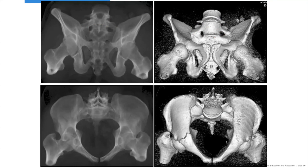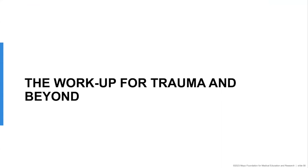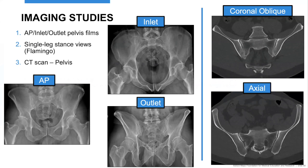When working up patients for post-traumatic arthritis, my standard workup includes APs, inlets, and outlets — with the outlet being absolutely key to look for transitional anatomy and to put SI joints in profile. All patients get coronal oblique CT scans, which are in-plane with the sacrum and allow you to really look at the pathways and SI joints nicely, plus axials. Both are used for preoperative planning.